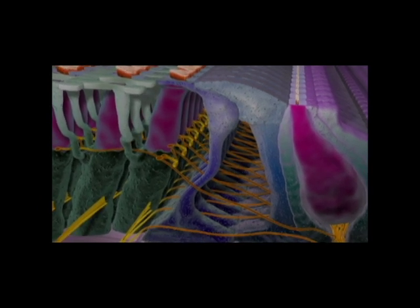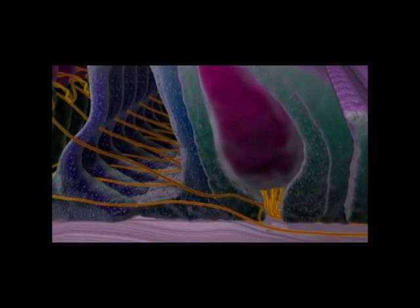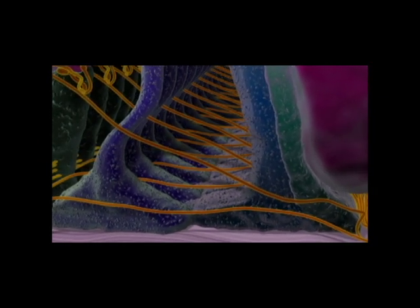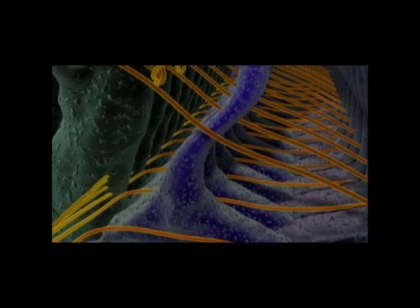Inner hair cells receive sensory nerve fibers from the cochlear nerve. Some sensory nerve fibers cross the floor of the tunnel of Corti and contact 6 to 100 outer hair cells, usually in the same row.